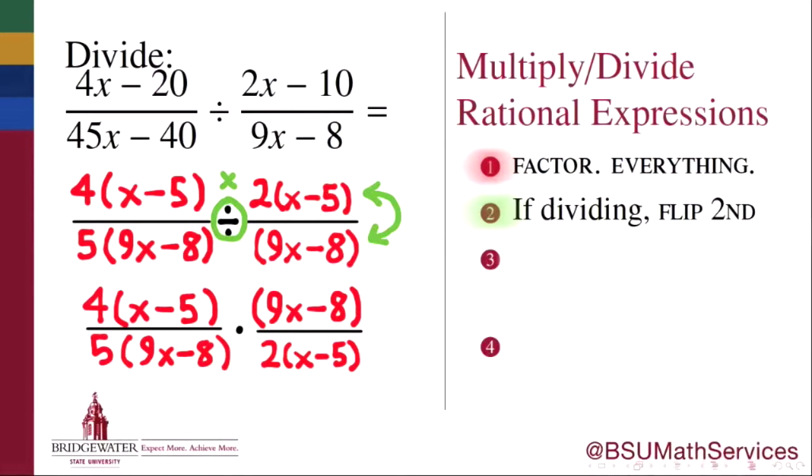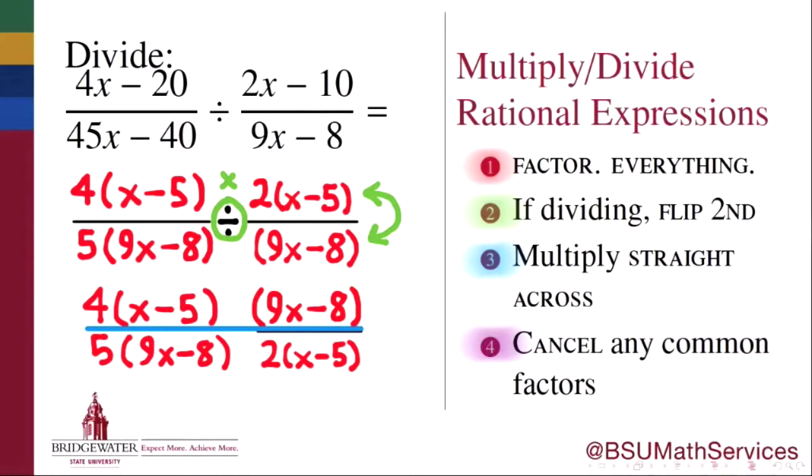And again, just like with rational numbers, when you multiply two rational expressions, the result is nothing more than the multiplication of the numerators and the multiplication of the denominators. In other words, multiply straight across. I'm going to write that by just making this into one big long fraction, by connecting the two fraction bars together. So that now, in the numerator of our product, we have 4 times the quantity x minus 5 times the quantity 9x minus 8. And in the denominator, we have 5 times the quantity 9x minus 8 times 2 times the quantity x minus 5.